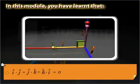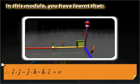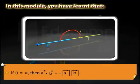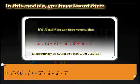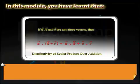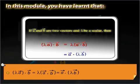When theta is equal to pi by 2, the dot product of unit vectors — that is, I cap dot J cap, J cap dot K cap, and K cap dot I cap — is equal to zero. The dot product of two vectors is the negative of the product of their magnitudes when the angle between them equals pi. The dot product of vector A with the sum of vectors B and C is equal to the dot product of vectors A and B plus the dot product of vectors A and C. The dot product of lambda times vector A with vector B is equal to lambda into the dot product of vectors A and B, which is further equal to the dot product of vector A and lambda times vector B.